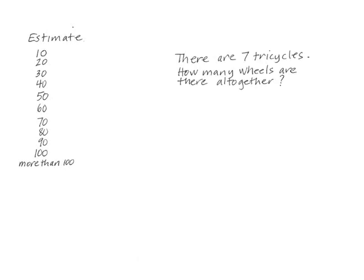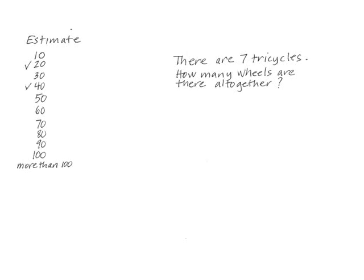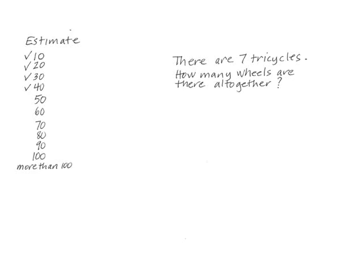I wrote the problem on the board: 'There are seven tricycles. How many wheels are there altogether?' Then I asked which number on the board they thought was the closest estimate. Sergio suggested 20, and I put a check mark next to 20. Peter thought 40, Alicia thought 30, and Lydia thought 10. I checked those numbers — those were all of the ideas they had.